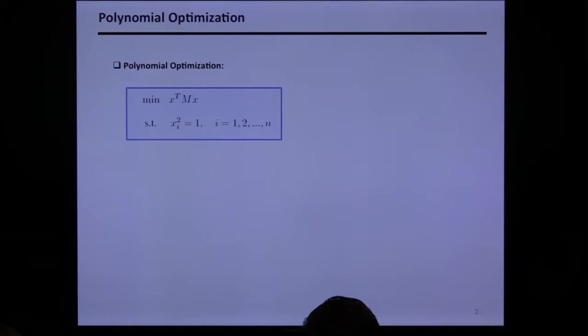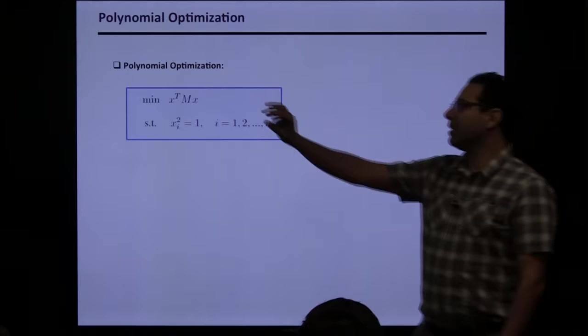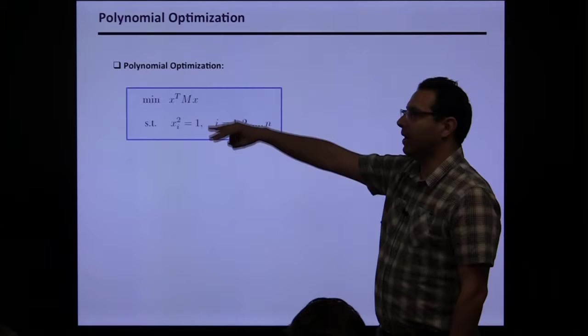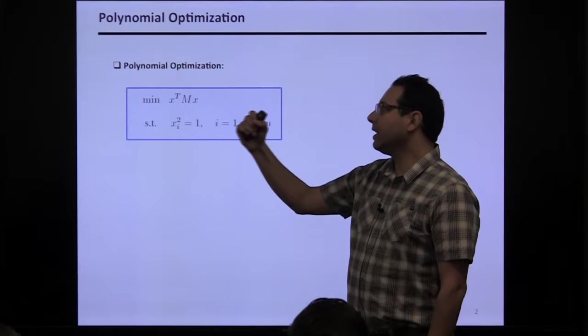This talk is about polynomial optimization. By polynomial optimization I mean the minimization of a polynomial objective function subject to an arbitrary number of polynomial constraints, where the variable X is a vector that could be real-valued or complex-valued.